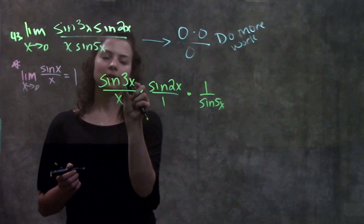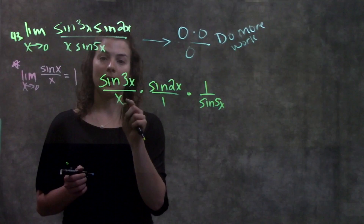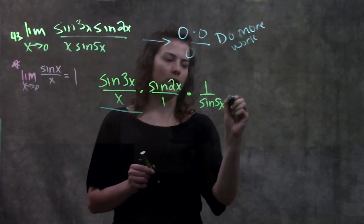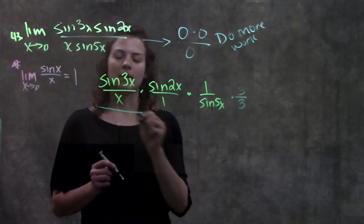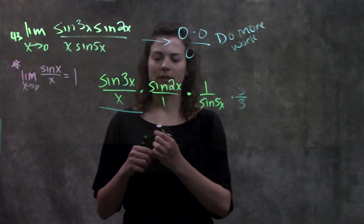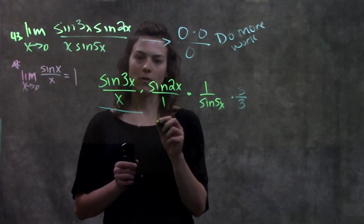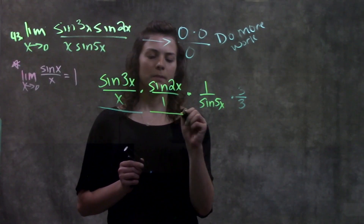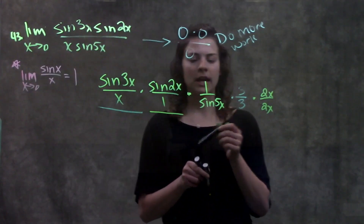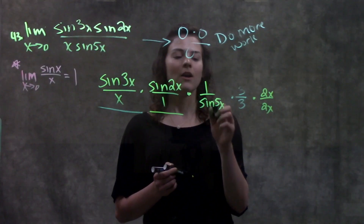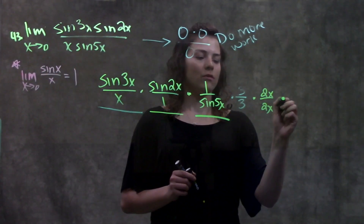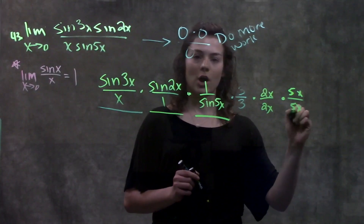This something doesn't match this something, so I need to multiply by a number so that they do match. I'm going to multiply by three over three so that when I bring the three over I'll have sine three x over three x — it matches the identity now. Same thing for the next fraction: I have sine two x over one. I need a two x on the bottom, so I multiply by two x over two x. And for the third fraction I have one over sine five x; I need a five x on the top. Even though this fraction is flipped and inverted the rule still works the same way, so I multiply by five x over five x.